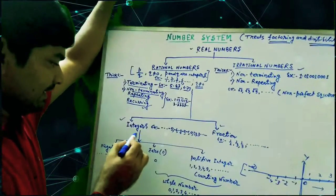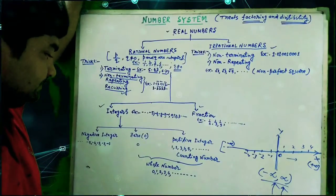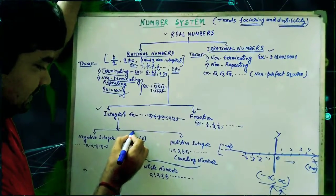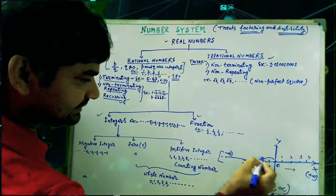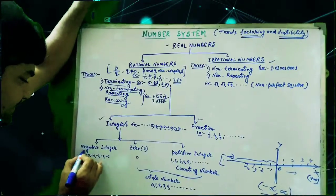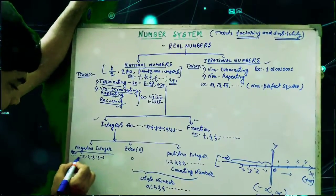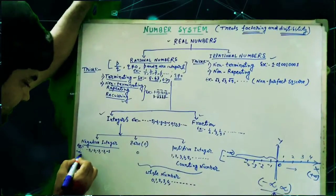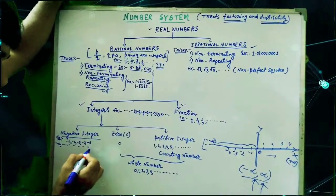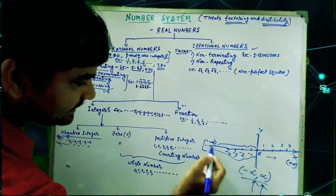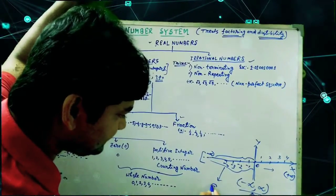Integers can be divided into three parts or three categories. Zero is the midpoint in the diagram. On the left side, the numbers from minus infinity up to minus 1 — that area is called negative integers. For example: minus infinity, ..., minus 5, minus 4, minus 3, minus 2, minus 1. This area in the diagram is called negative integers.